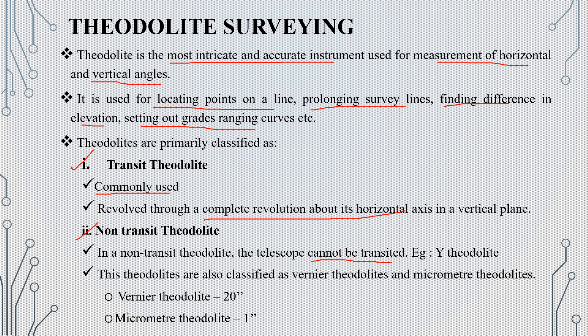The non-transit theodolite cannot rotate completely about its horizontal axis. Transit theodolites are further classified into two types: vernier theodolites and one-second theodolites.